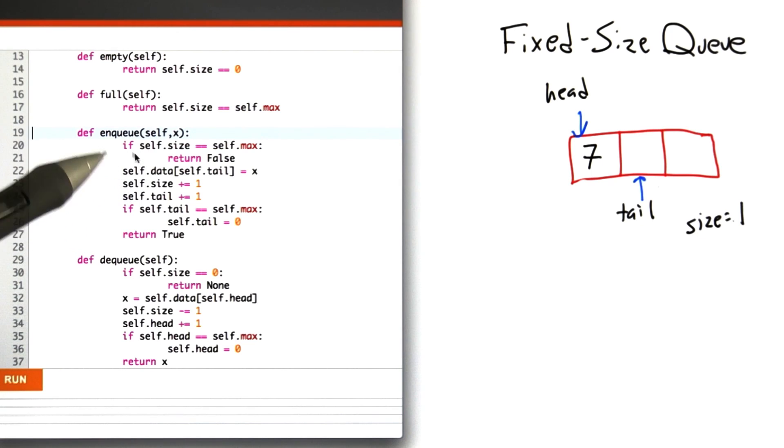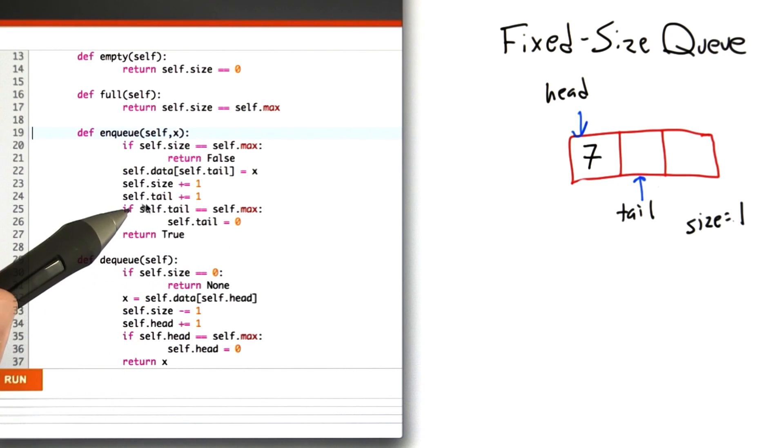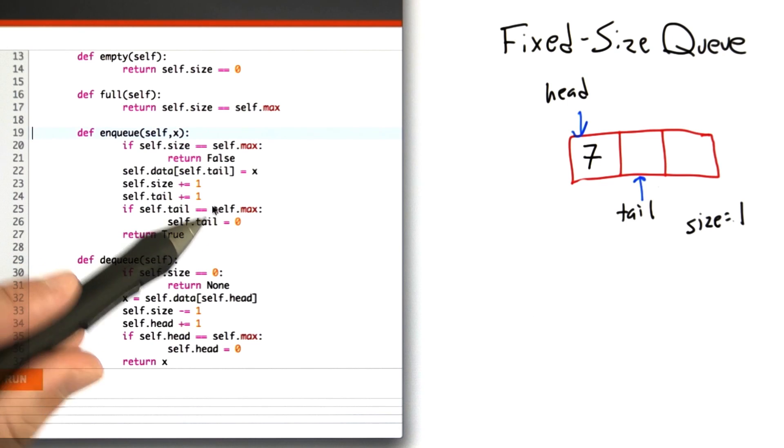The only bit of logic that's tricky here is if the tail points past the end of the queue—that is, if it's equal to the max. Remember with a 0-indexed array, the maximum value is going to be 1 past the end of the queue. We're going to reset the tail to point at the 0th element, the beginning.